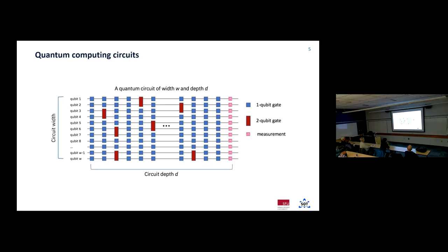We can write out a quantum circuit algorithm analogously to a classical one: start with qubits in a well-defined state, apply gates operating on one or two qubits at a time — like AND or OR operations in a traditional computer — and at the end take measurements. Here's where it gets subtle: when you do the measurement, Schrödinger's cat isn't alive and dead at the same time anymore — it's either alive or dead. All those quantum states collapse down to one outcome.